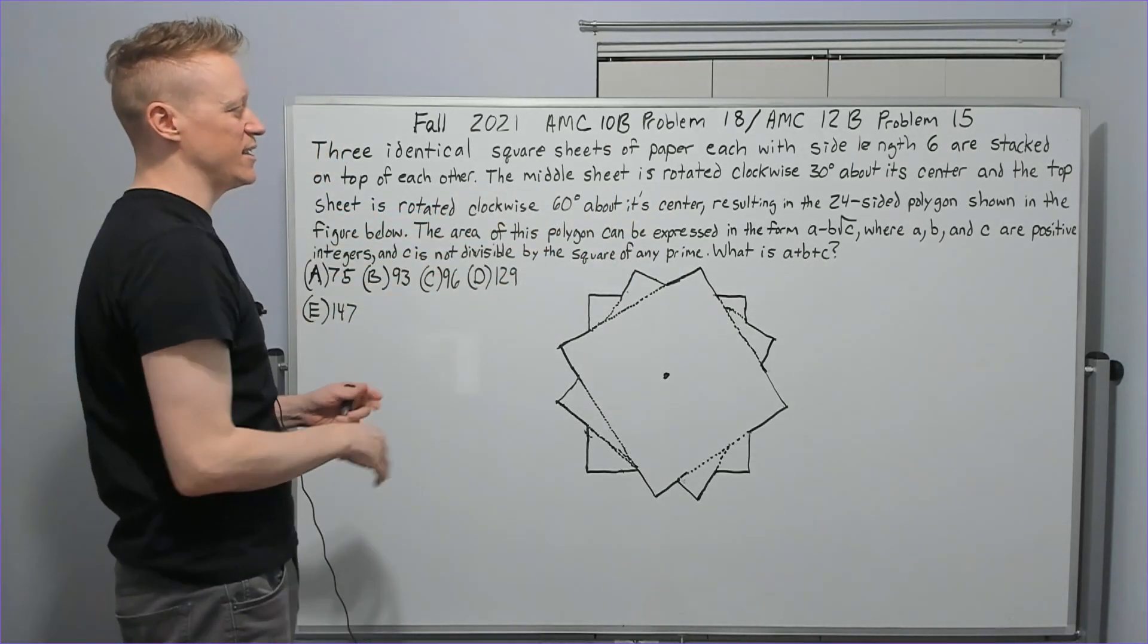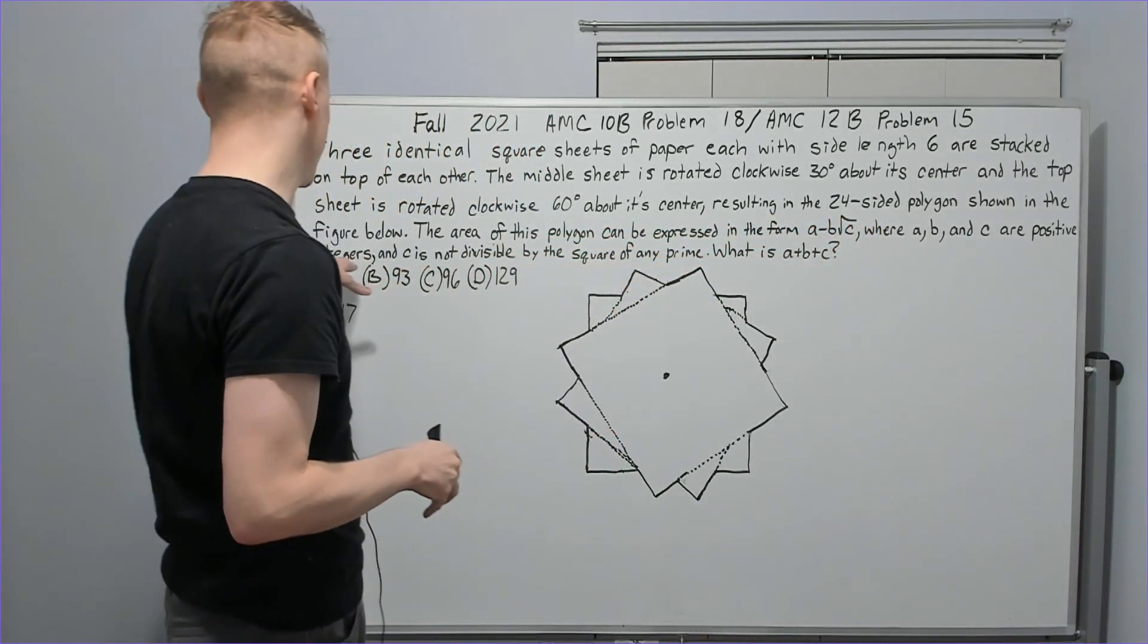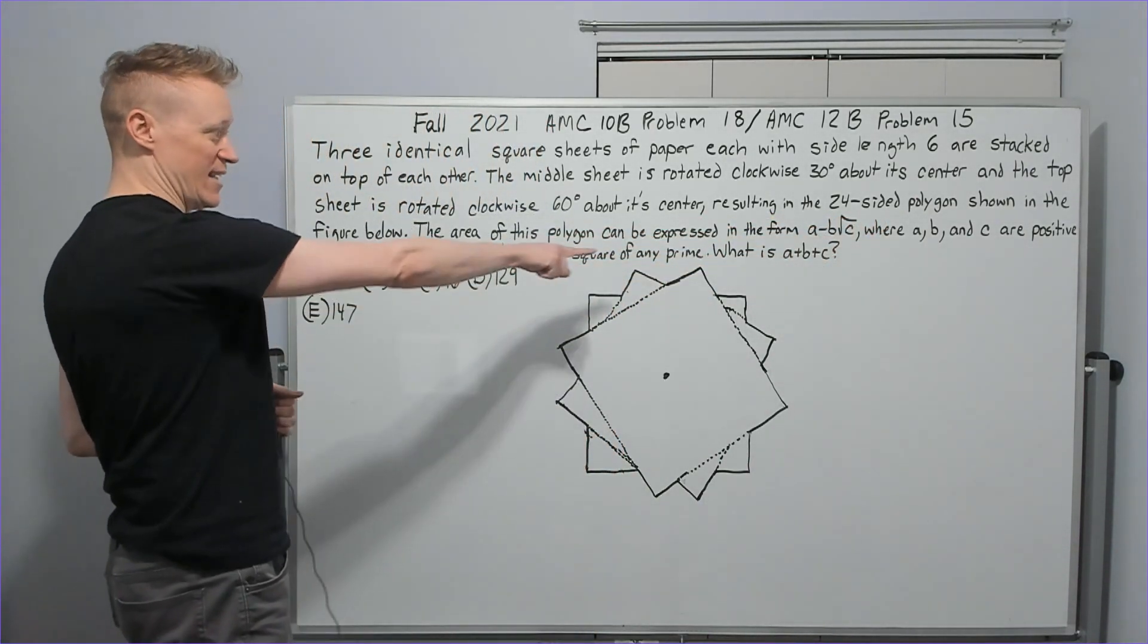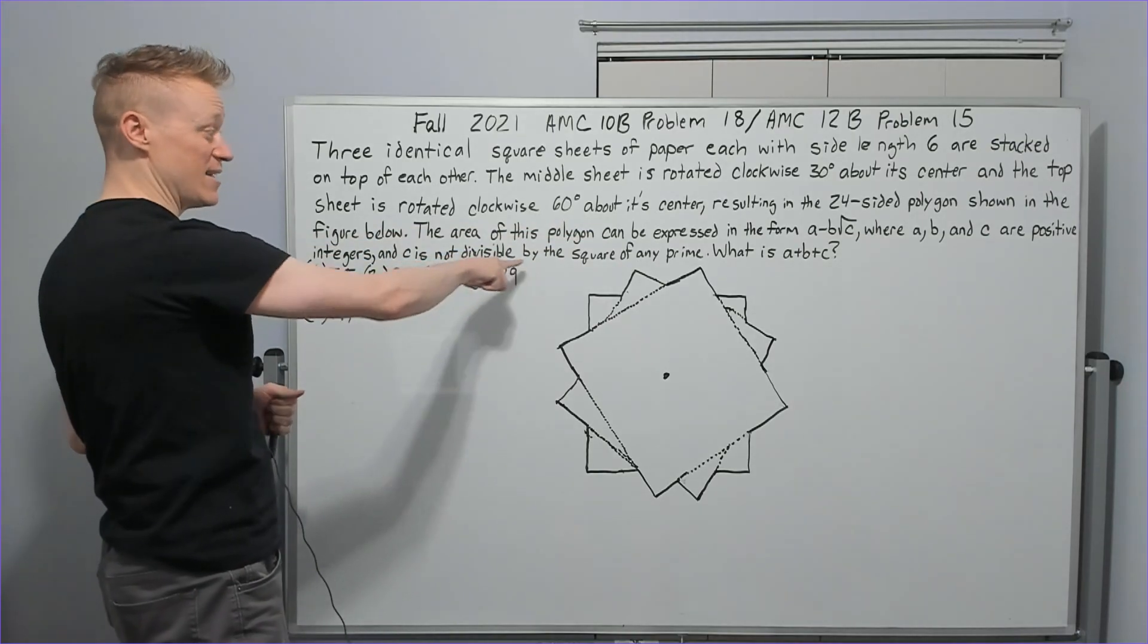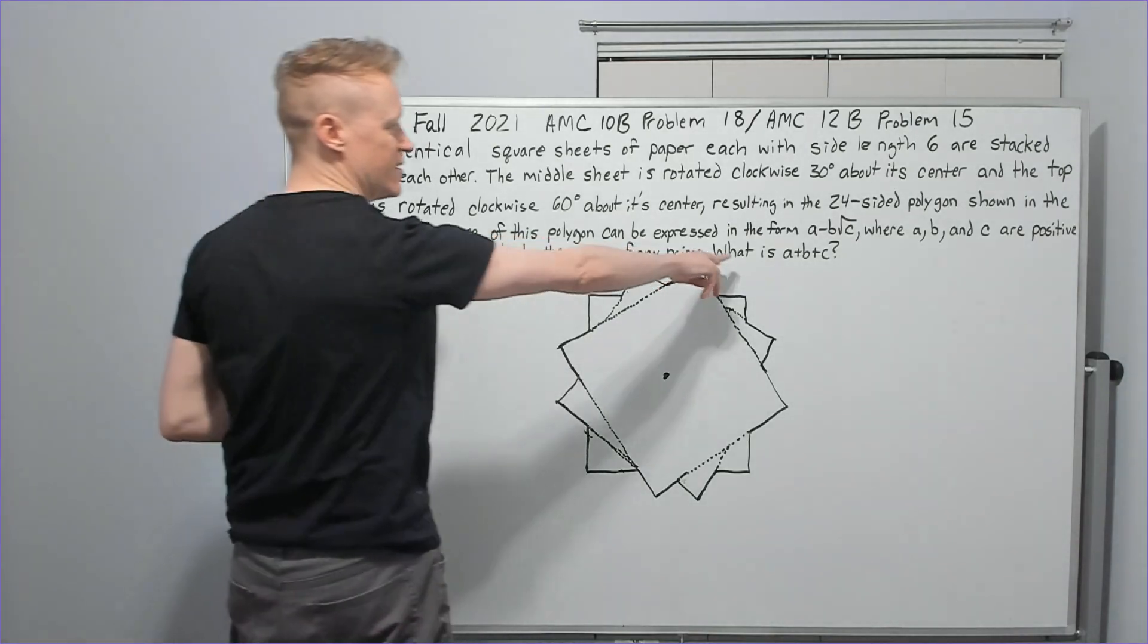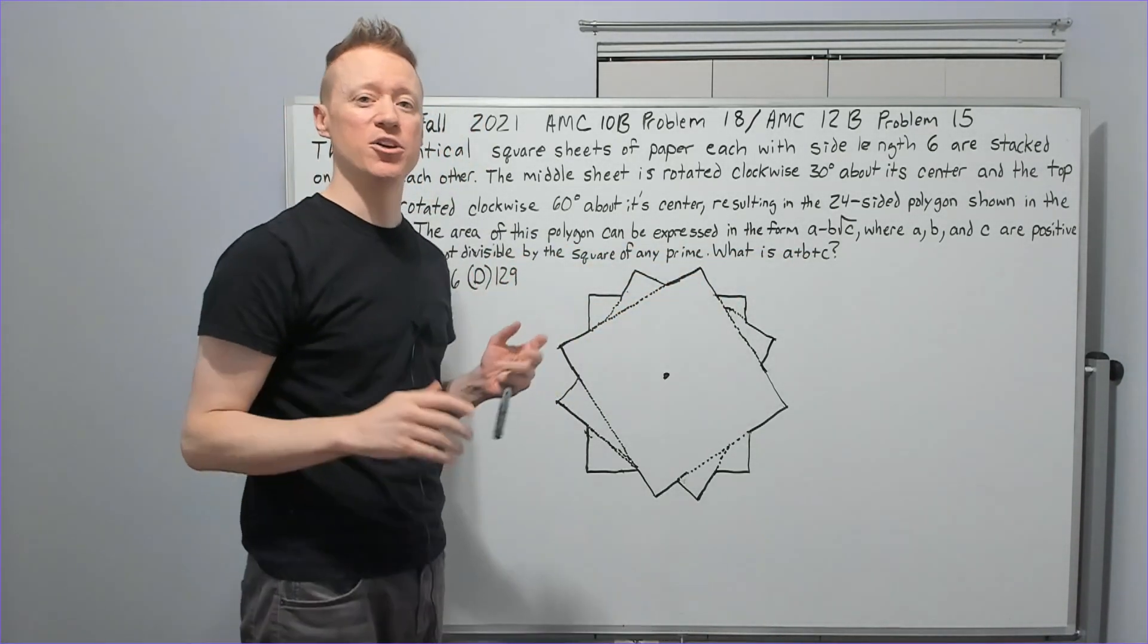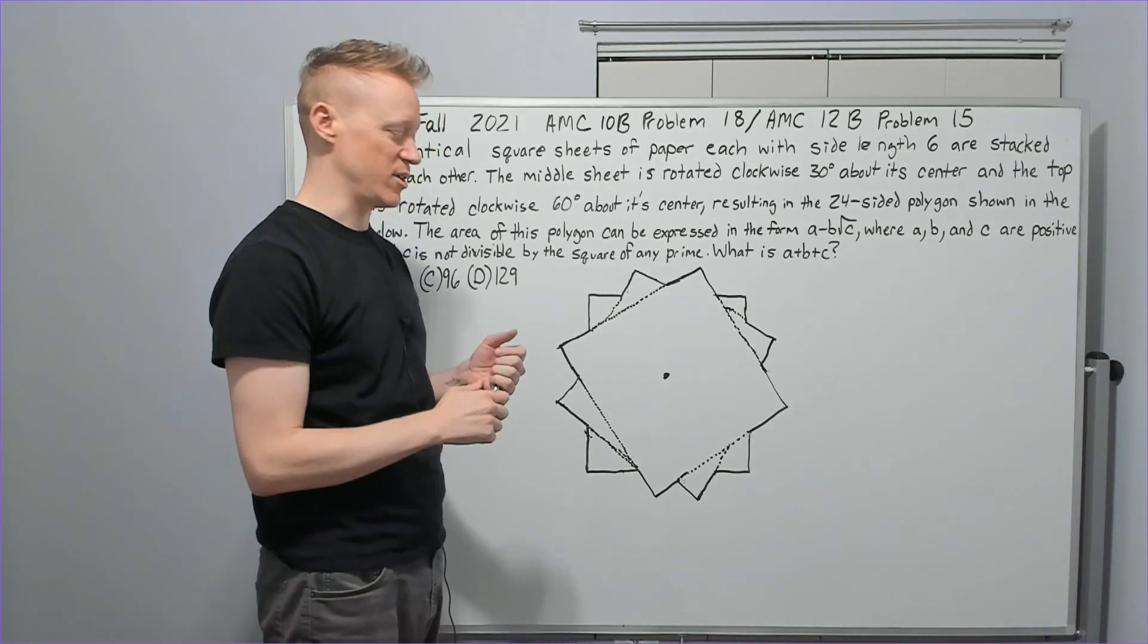The area of this polygon can be expressed in this form where these are positive integers and C, the inside of the square root, is not divisible by the square of any prime. In other words, it's been simplified. What is the sum of those integers? How are we going to do this? This is the approach I use on the test and how I think trig can pay an advantage.